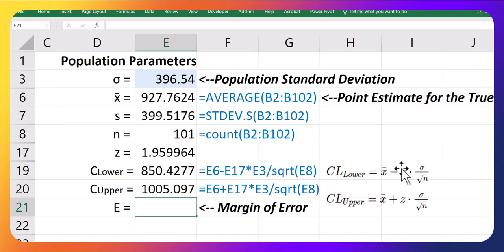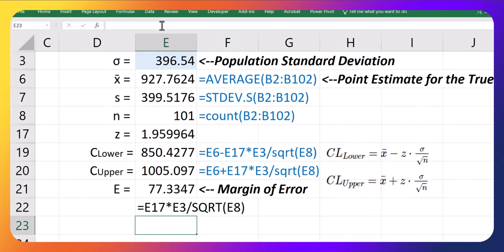One little note, what we add and subtract, so this piece here that's after the plus minus, this is called the margin of error. So sometimes we're just interested in that piece. That is just the z-score times the standard deviation divided by the square root of the sample size. So that margin of error is 77.33, if you will.